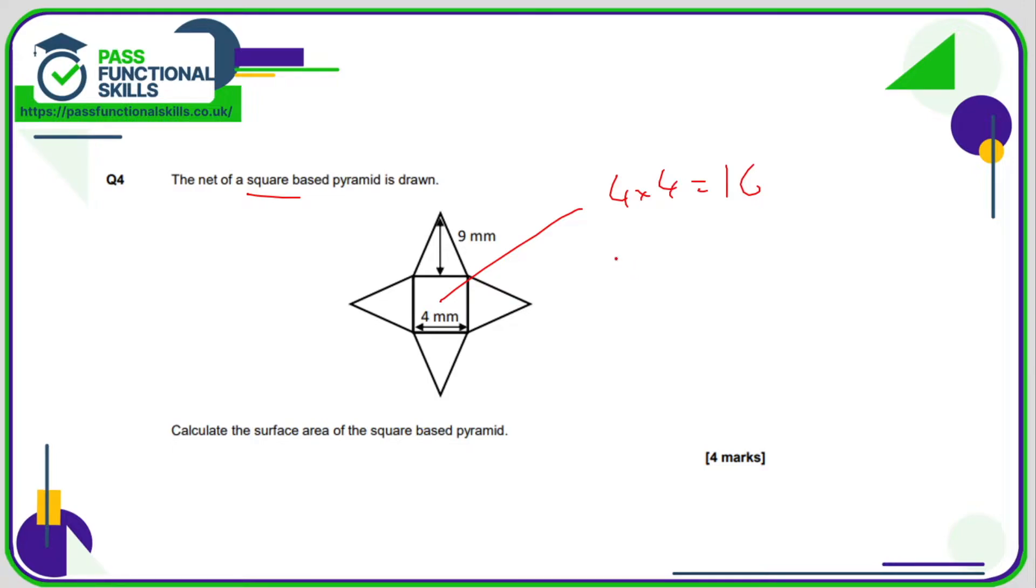So the area of a triangle is going to be 4 times by 9 divided by 2, but we've got 4 of these triangles, so we need to multiply that by 4. And 4 times 9 divided by 2 times by 4 comes to 72. 72 plus 16 is 88, and that's going to be millimeters squared.